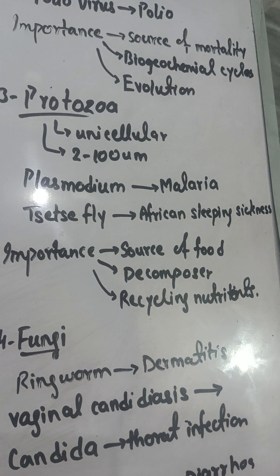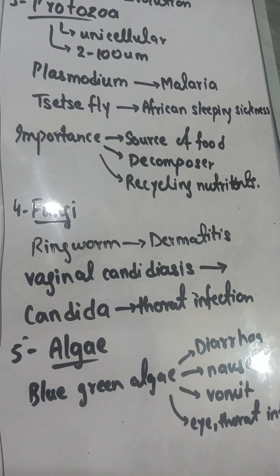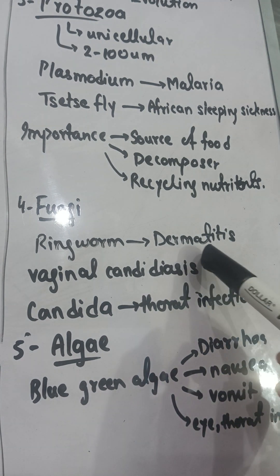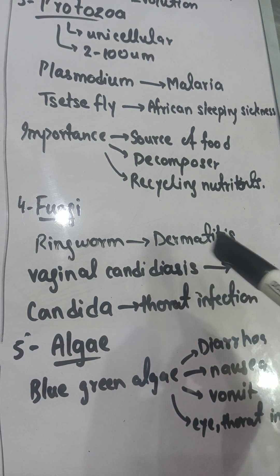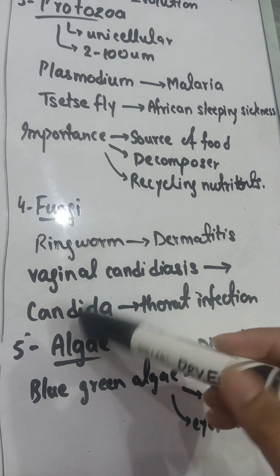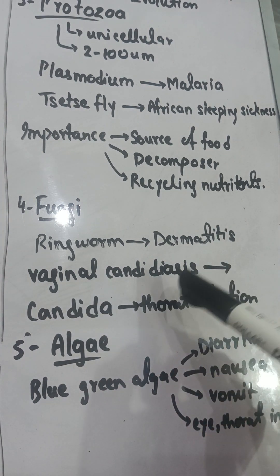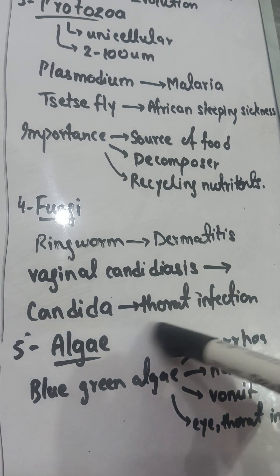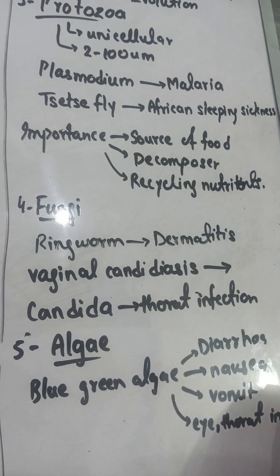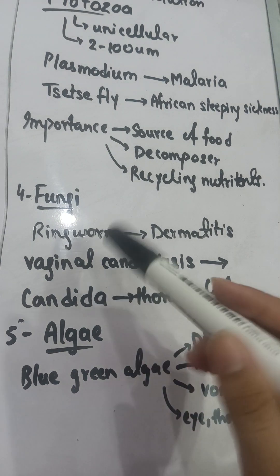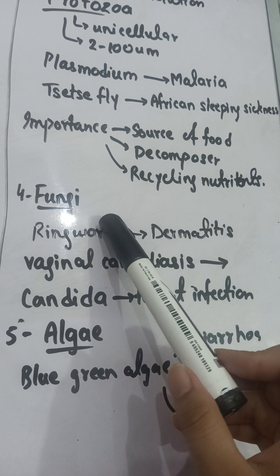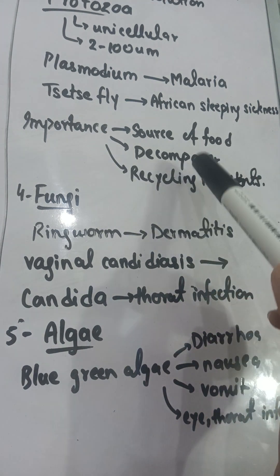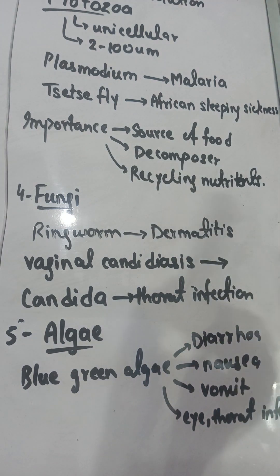The next type of microorganism is fungi. Ringworm is a fungus causing dermatitis and skin infections, forming a circular ring on the skin. Fungi also cause vaginal candidiasis and throat infections. Candida is a type of yeast — a fungus. The importance of fungi is similar to protozoa: they serve as a source of food, act as decomposers, and help recycle nutrients back to the water.